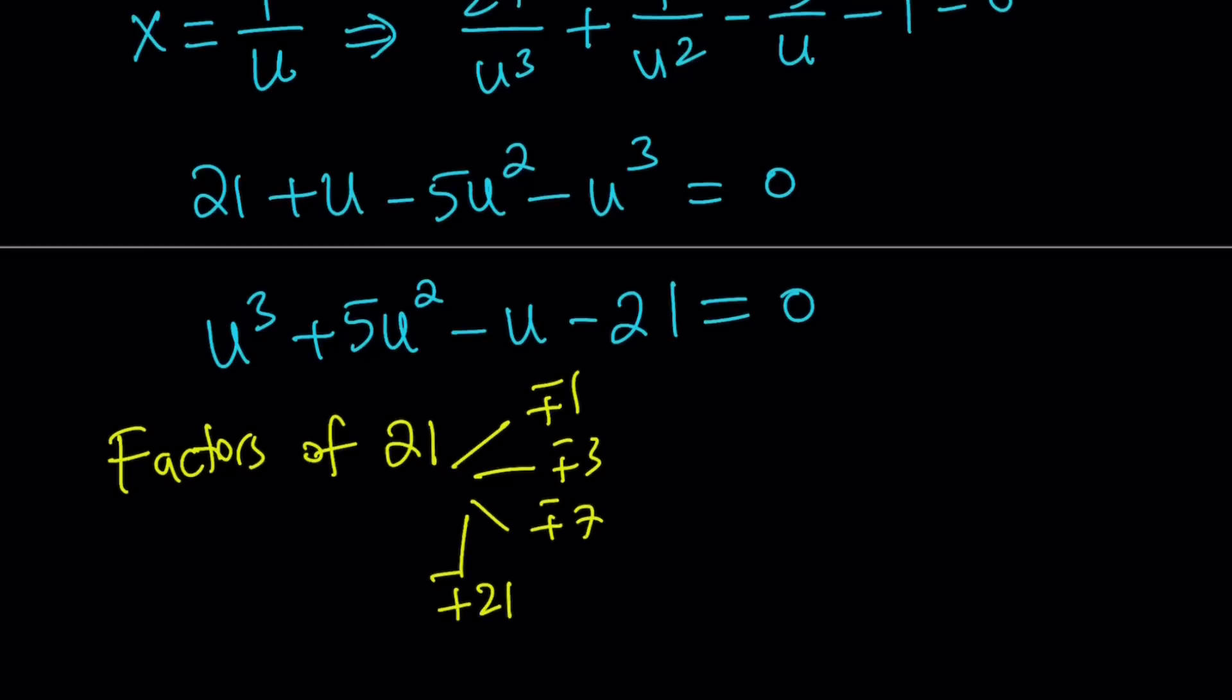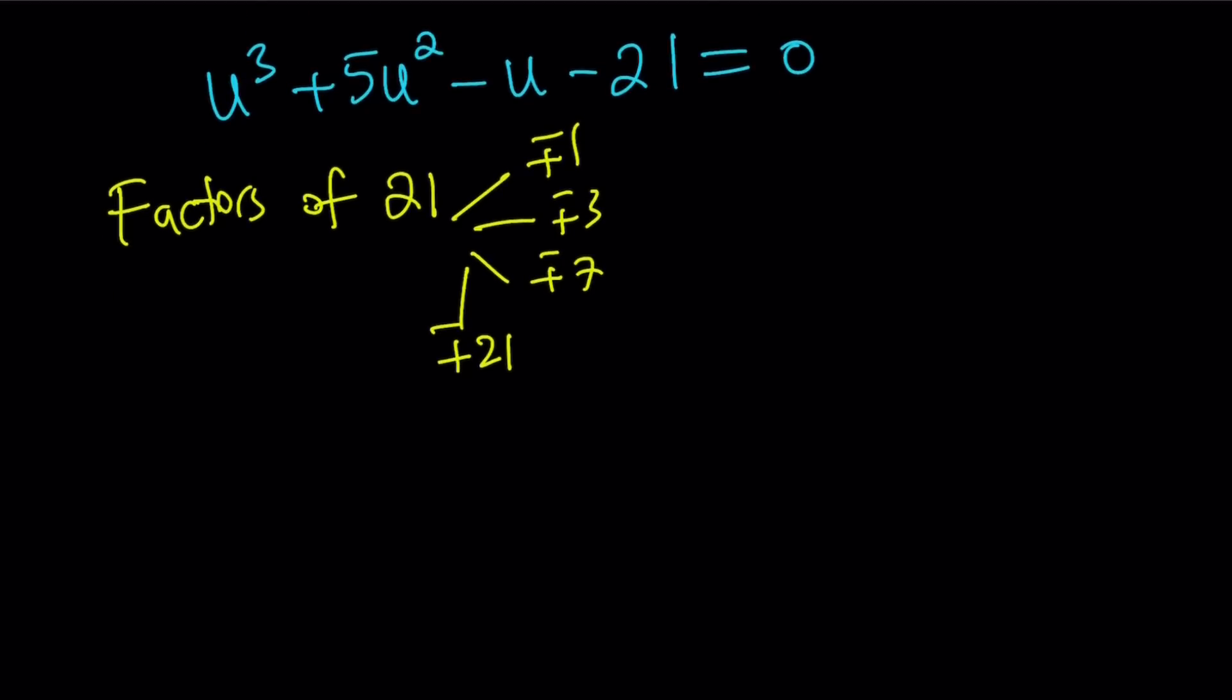Since 21 is 3 times 7, the product of two prime numbers, then it should have four positive and four negative factors. Awesome. So you get eight values of u. Eight values of u. Okay, so you've been cloned. So among these, one of them hopefully is going to work, and actually it does. So to save you all the trouble, I did the work for you, and u = -3 works. Awesome, great.